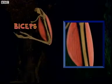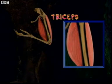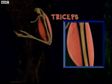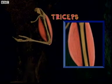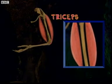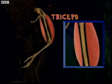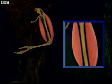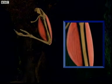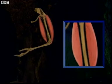To straighten your arm, the opposite happens. The triceps contracts and the biceps relaxes. This pulls the bones straight. Muscles can only contract and pull bones — never push them.